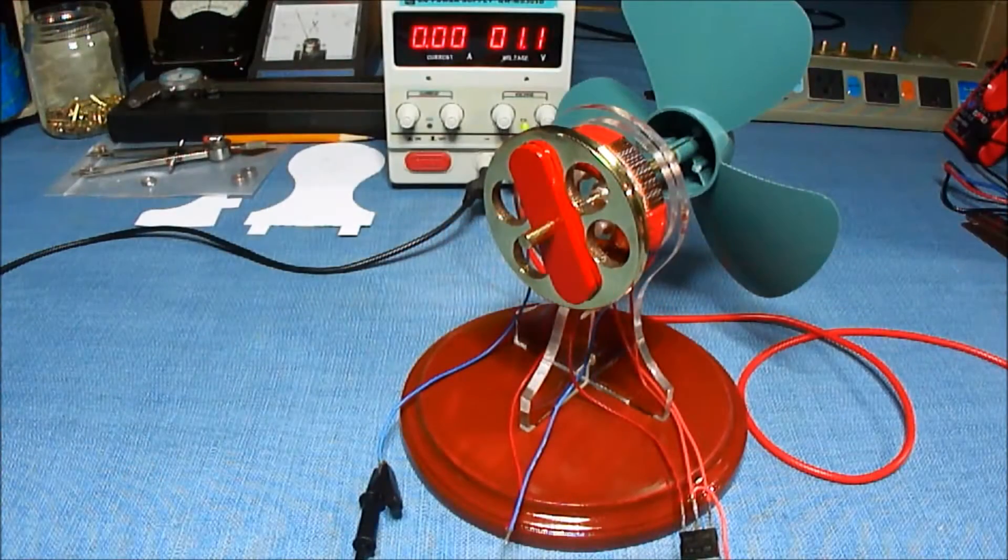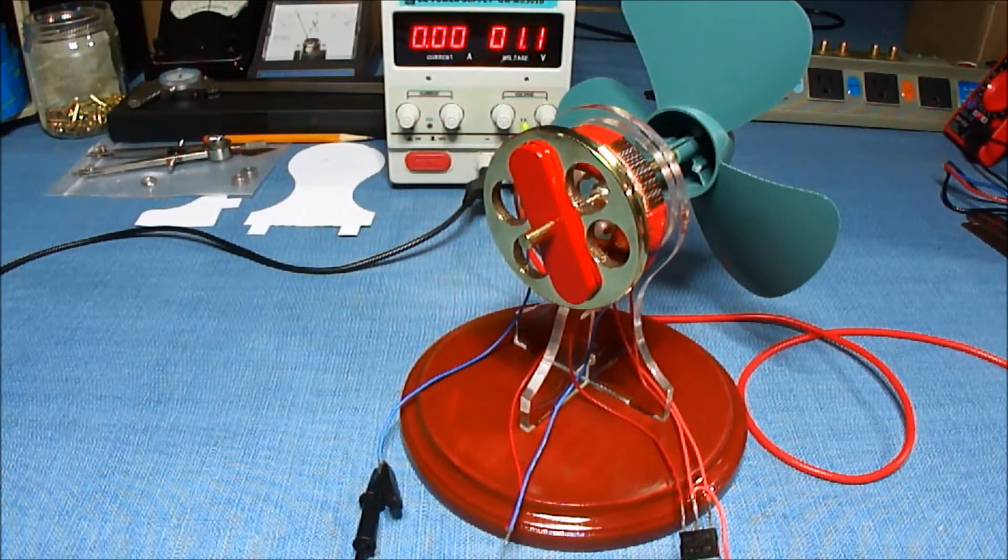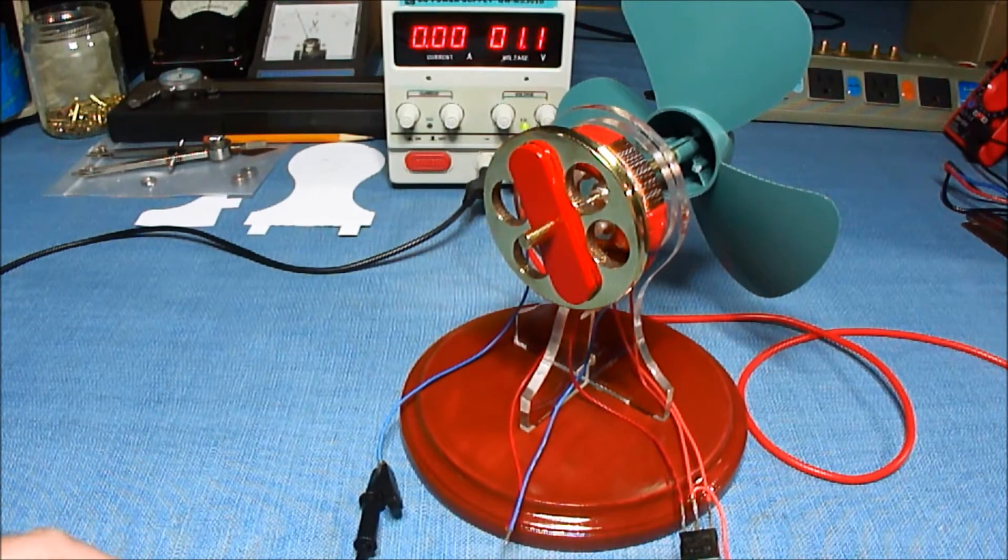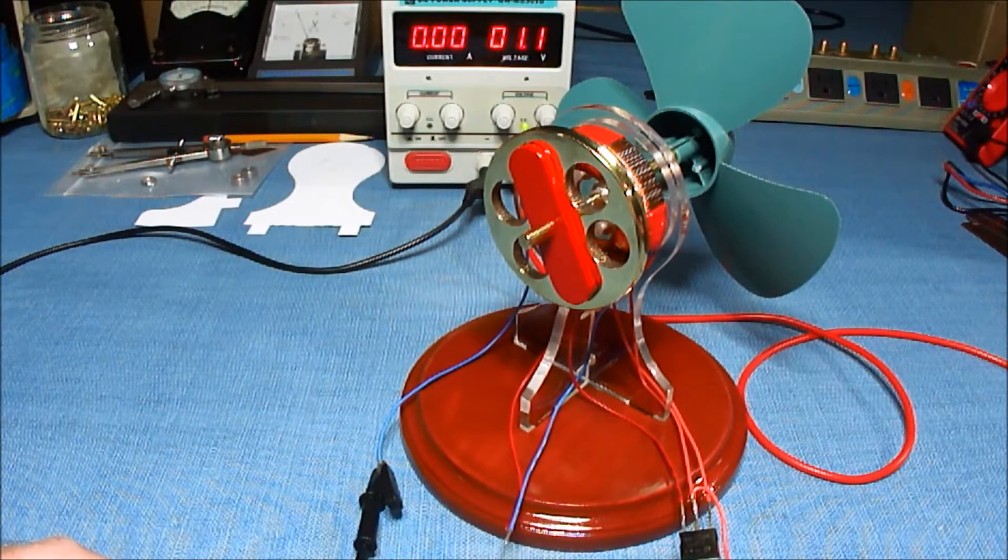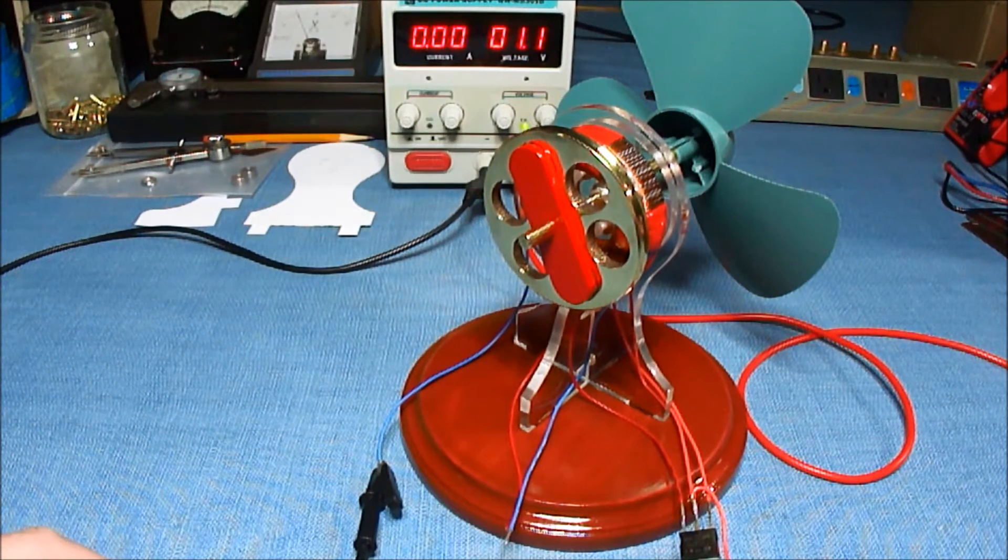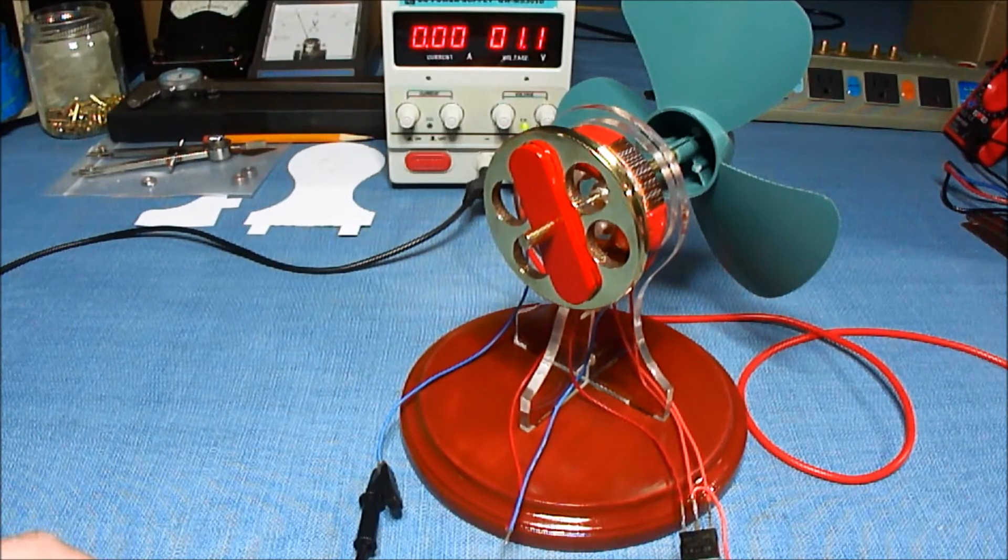This is a cogless pulse motor generator that I built. I wanted to see if you could use a toroid core for a motor and generator using two neodymium magnets facing the core.